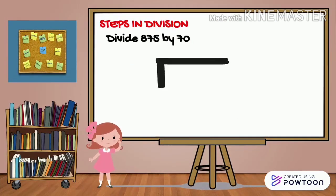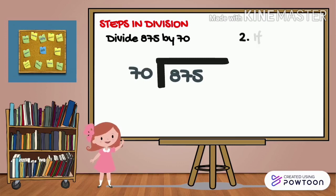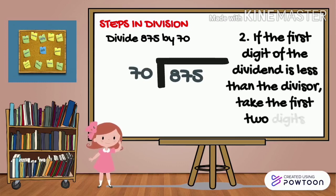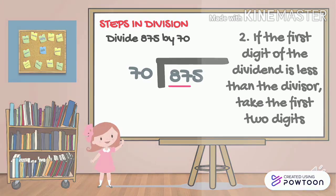Proceed naman tayo sa step 2. So we're dividing 875 by 70. If the first digit at the dividend is less than the divisor, take the first two digits. So dito sa ating example, ang ating dividend is 875. And 8 is less than 70. Therefore, we take the first two digits. So 87.